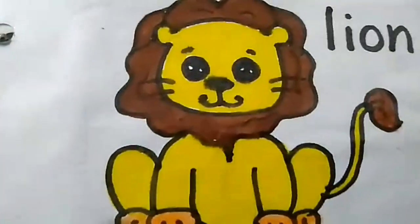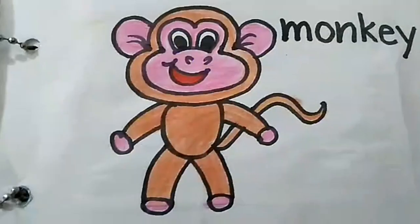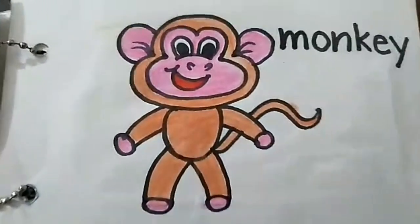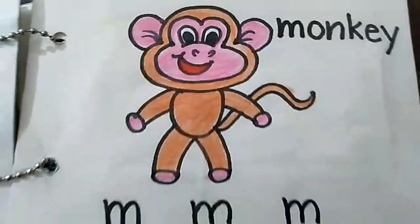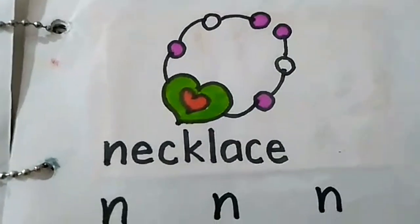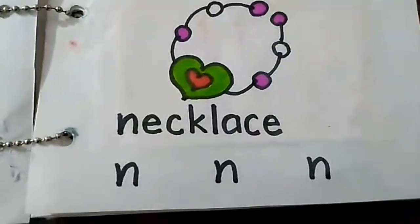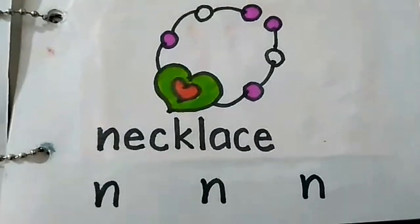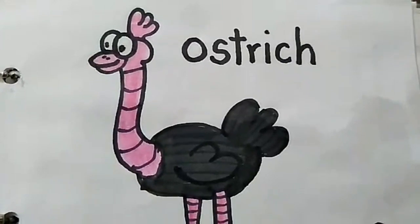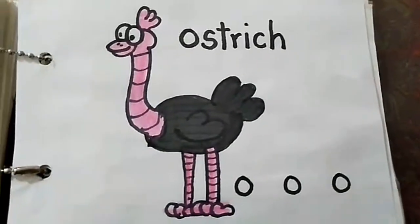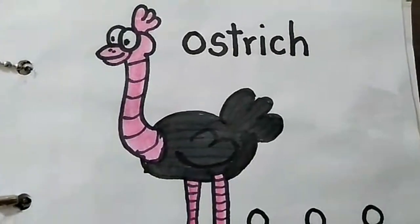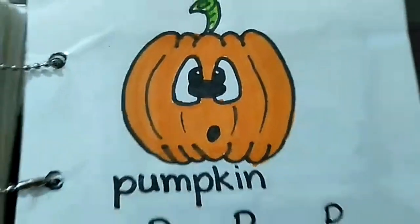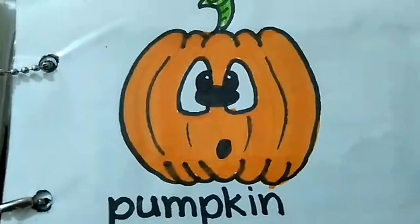Monkey, monkey, mm, mm, mm. Necklace, necklace, nn, nn, nn. Ostrich, ostrich, o, o, o. Pumpkin, pumpkin, pp, pp, pp.